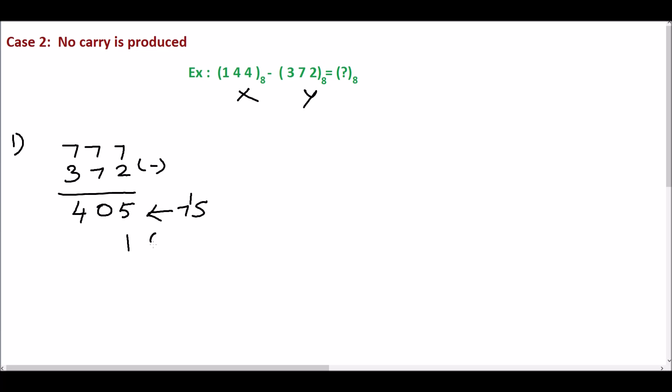Add 1 with this to get the 8th complement. 5 plus 1 is 6. 0, 4. 4, 0, 6 is the 8th complement.